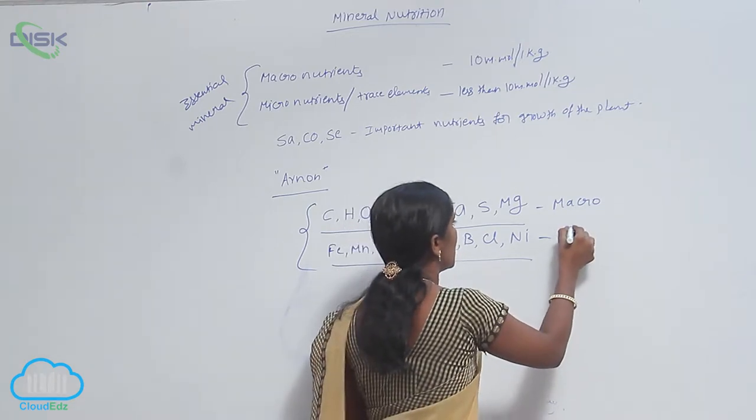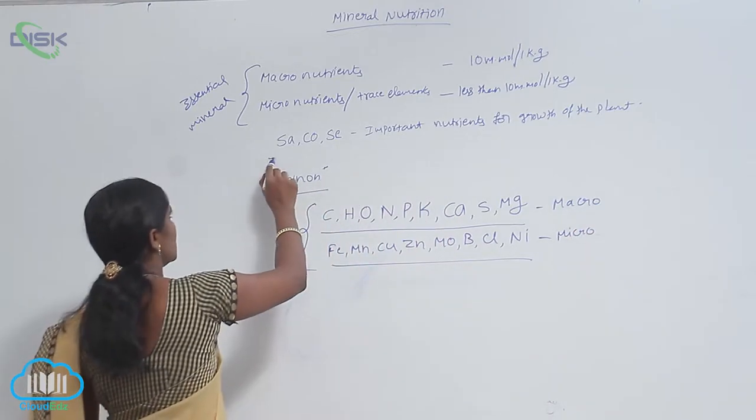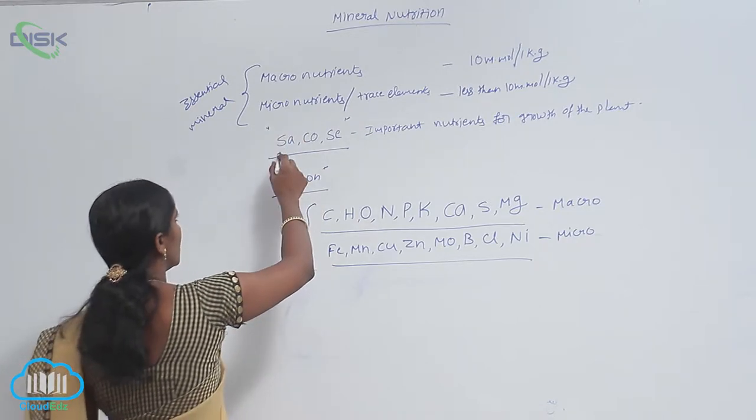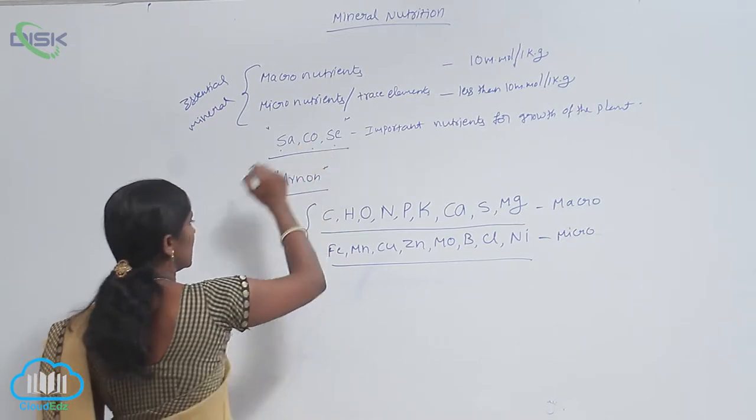These are considered micronutrients. Along with these, additional nutrients are also available and required for plant growth and development: Na (sodium), Co (cobalt), and Se (selenium).